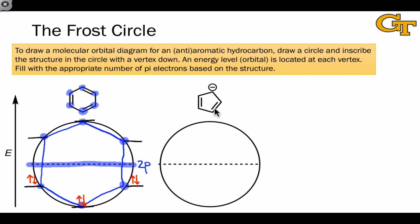This method works equally well for ions as long as they're monocyclic and only hydrocarbons. Here we have a regular pentagon, and we're going to place this shape in the circle with the vertex of the pentagon pointing down. Here it is, and at each point where the shape touches the circle, we have an orbital energy level.